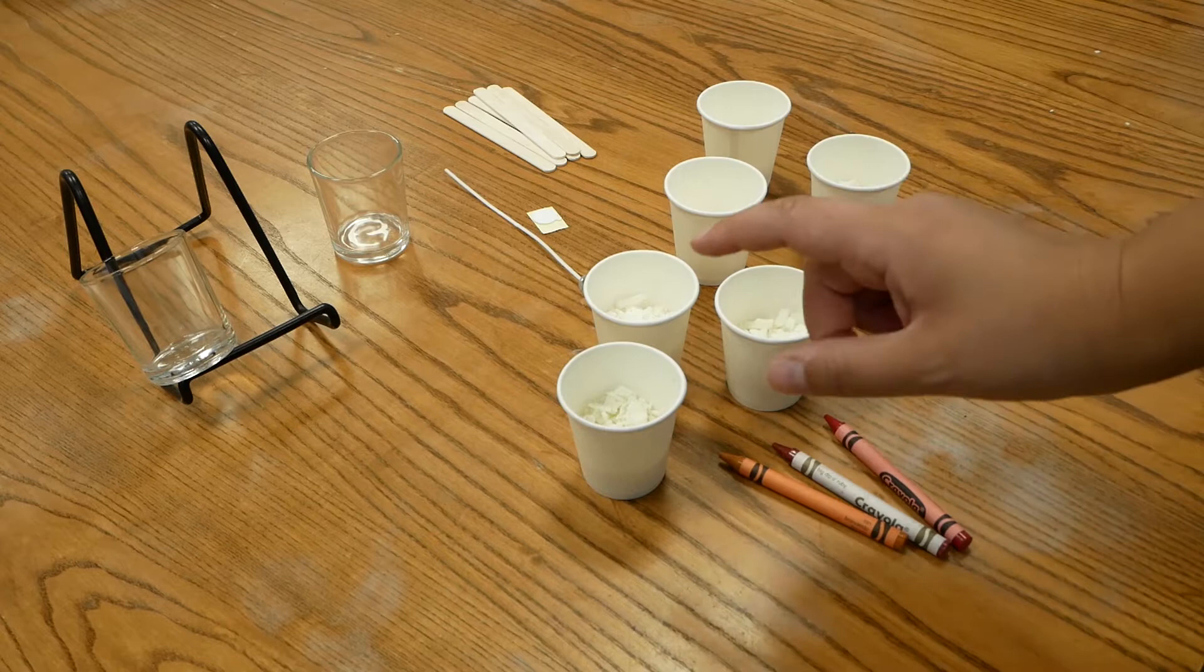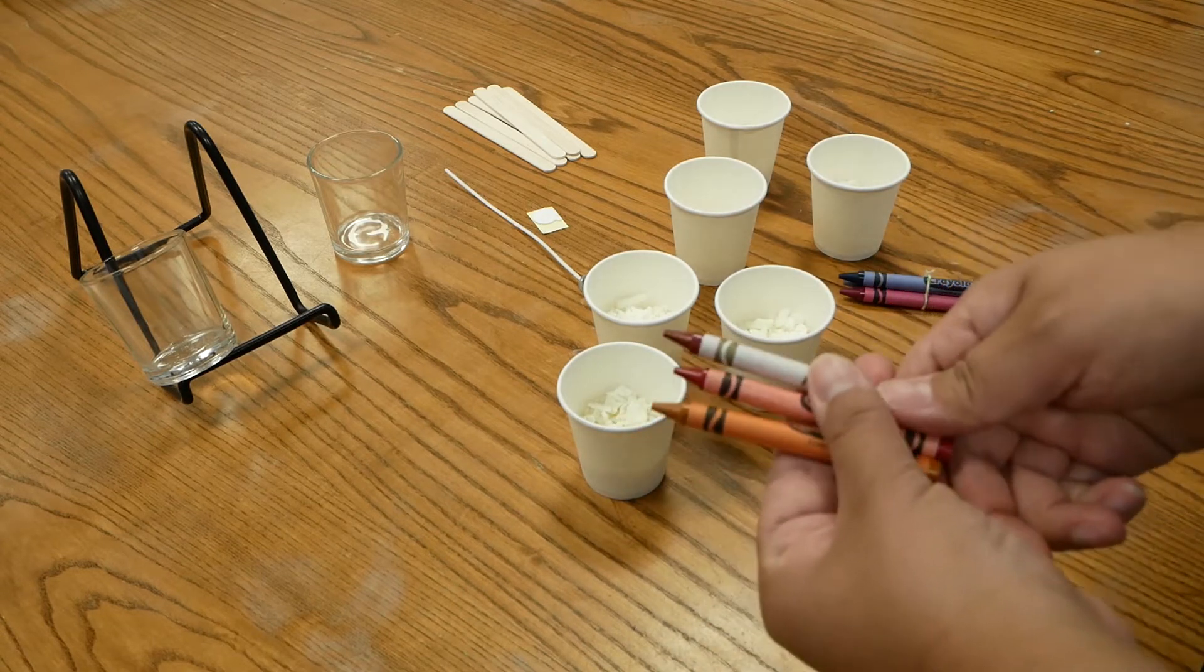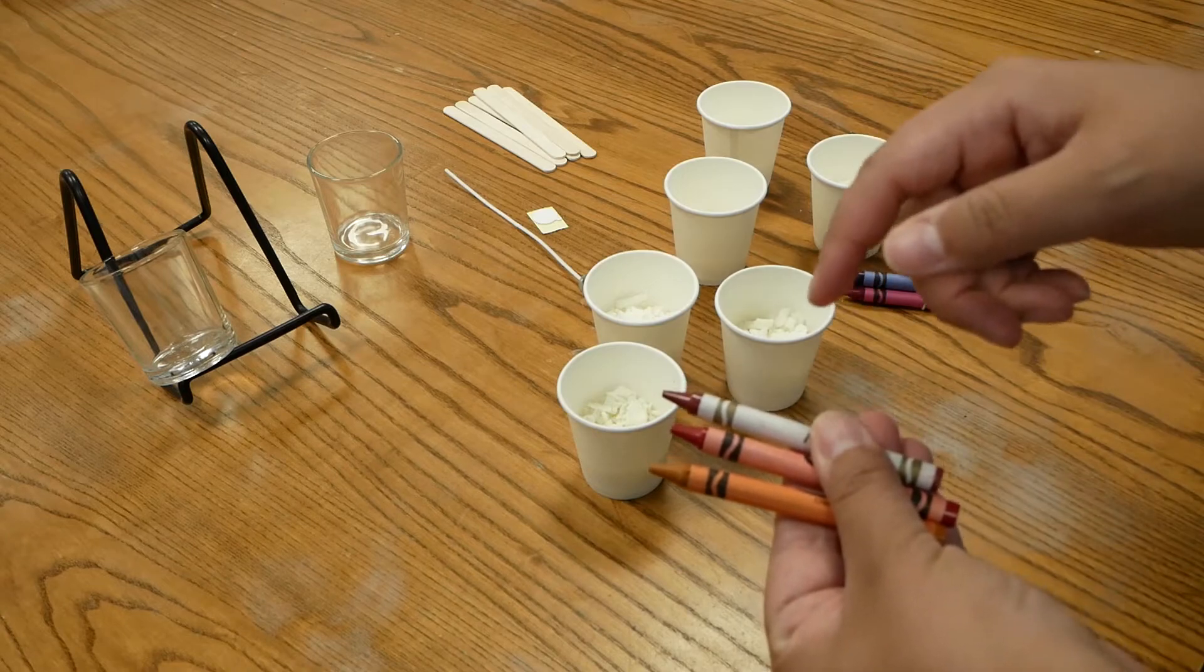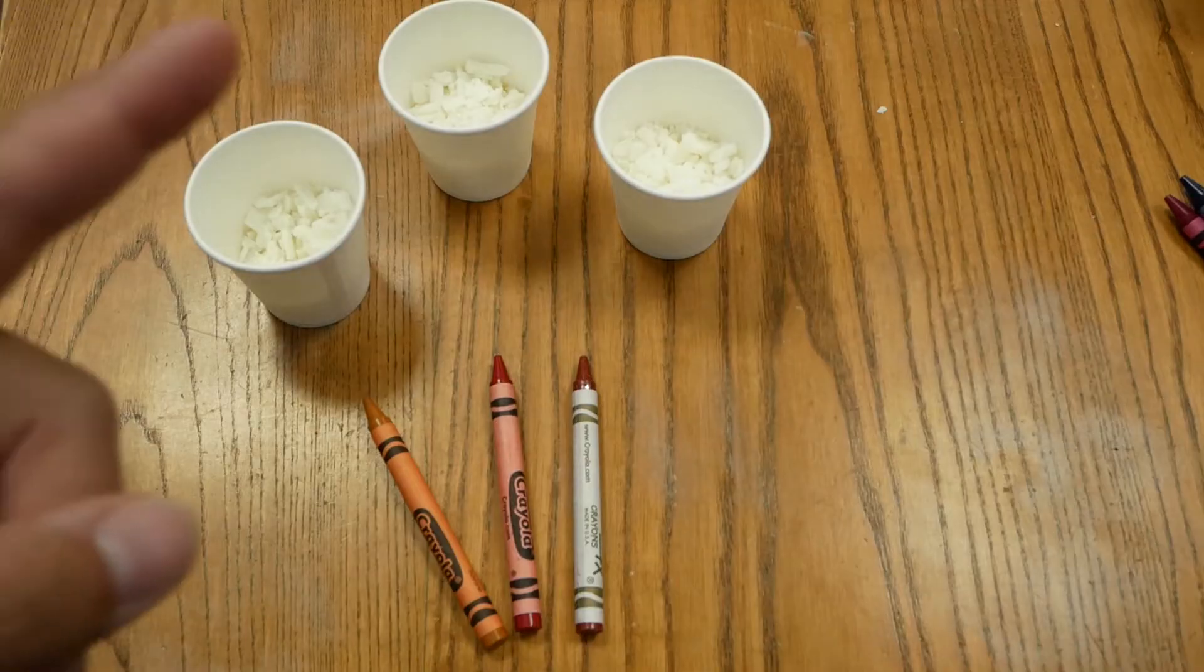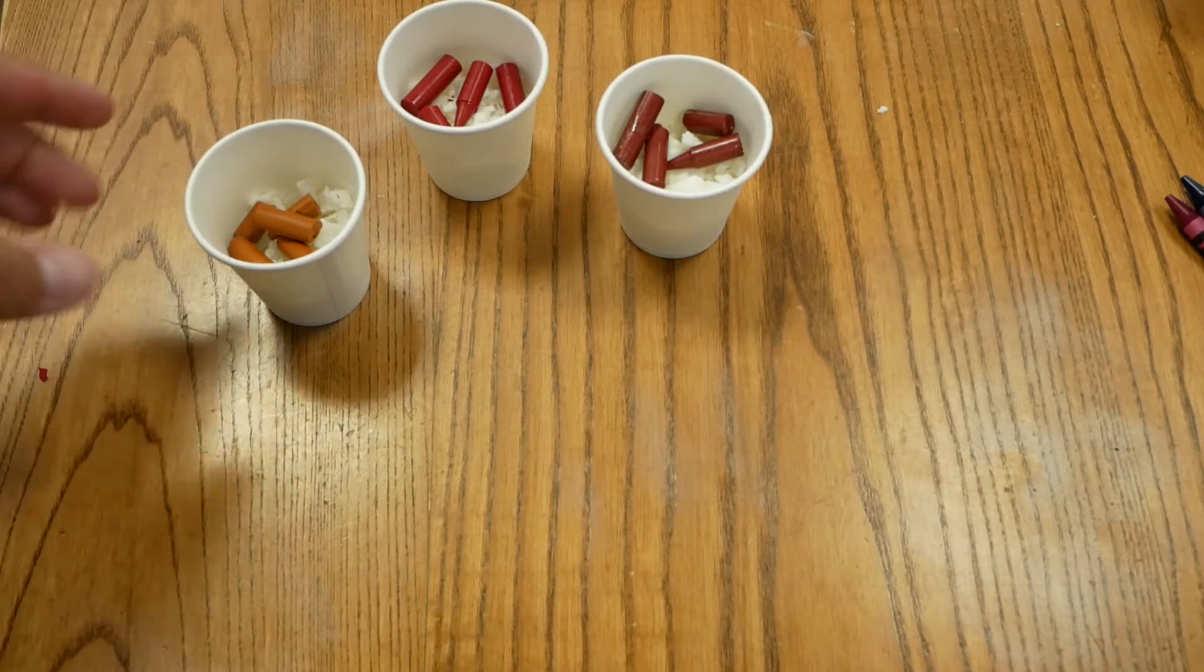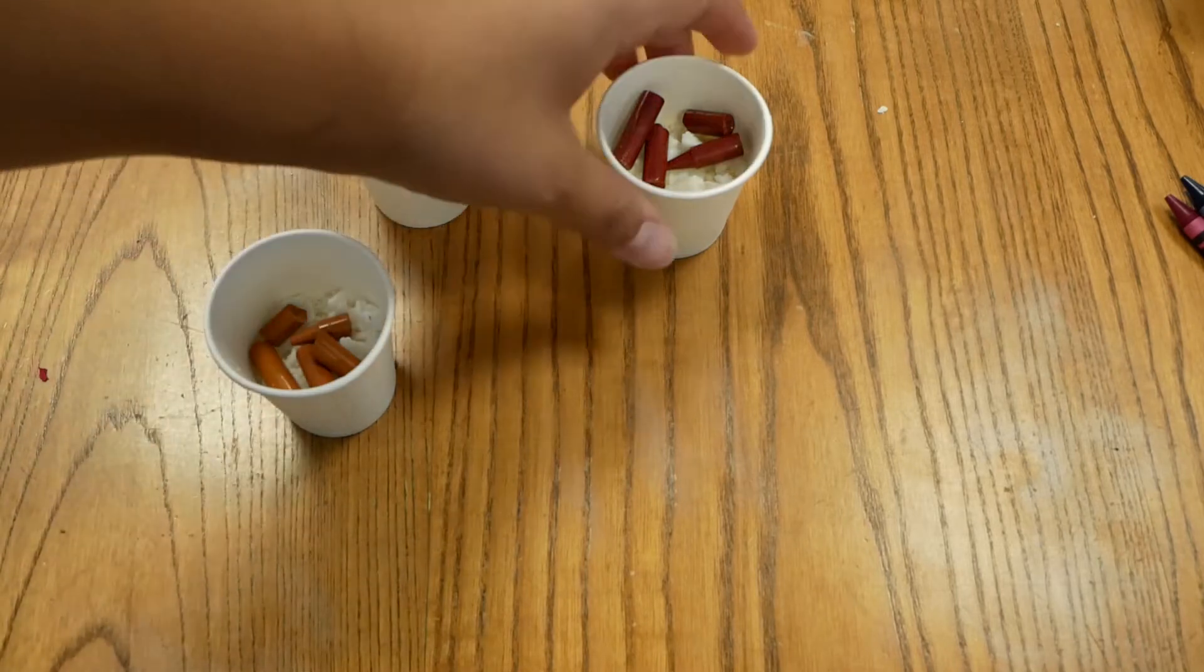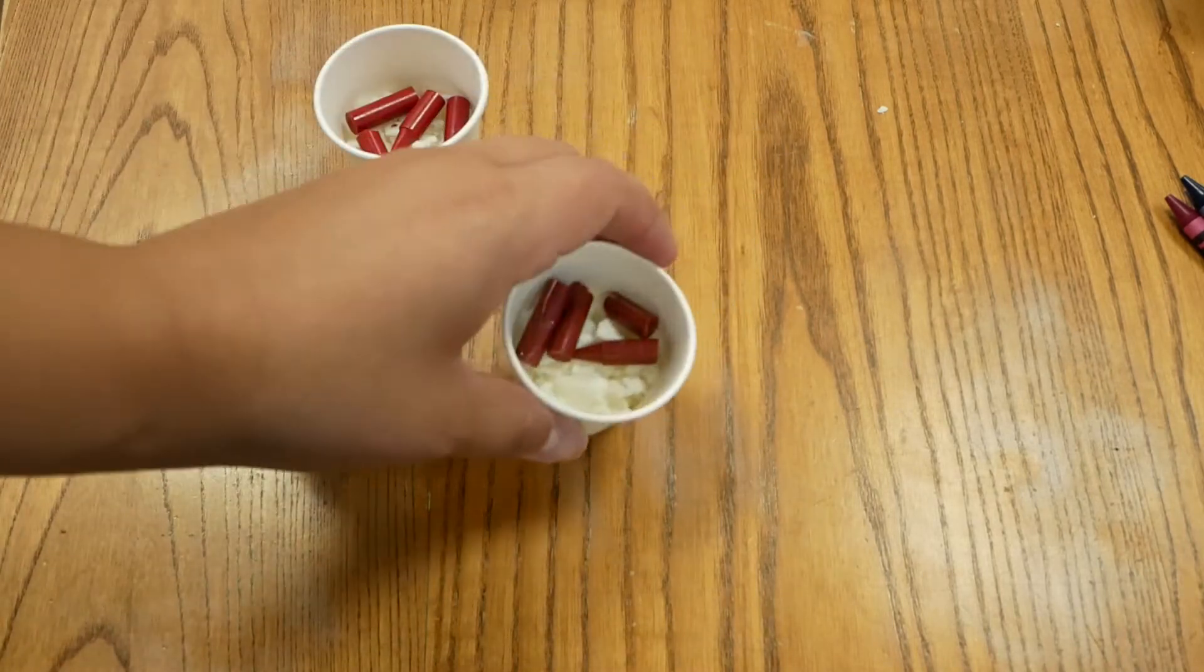The next step is to take your crayons and put one entire crayon, broken up, into each cup. The crayons are actually acting as a dye for the wax. Now we're going to take this cup and microwave it for 60 seconds.